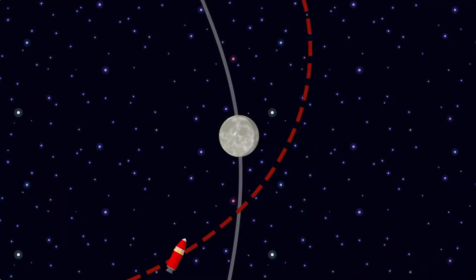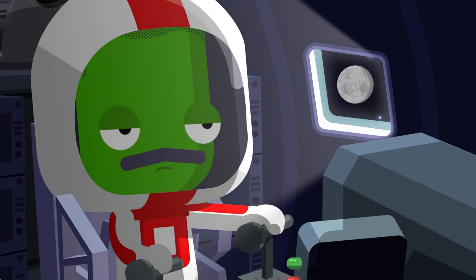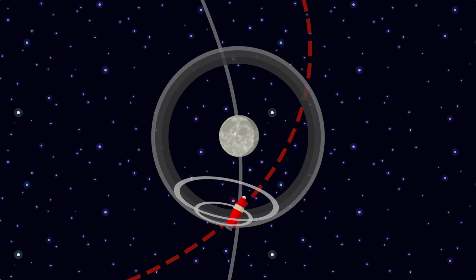Let's assume you've left at the right time and the MUN is there to meet you. As your vessel approaches the MUN, it enters a zone in which the MUN's gravitational influence on your orbit is stronger than Kerbin's. This zone is called the MUN's sphere of influence.